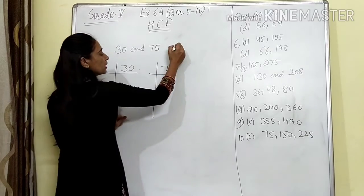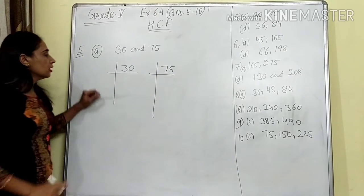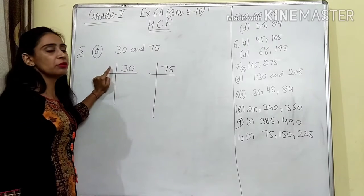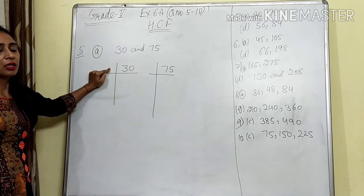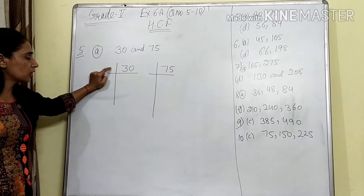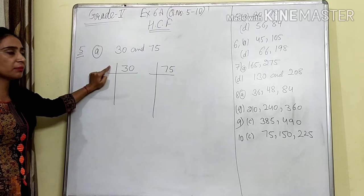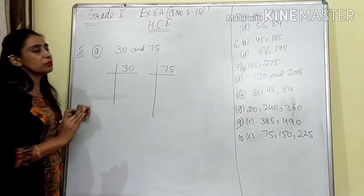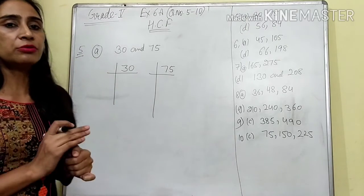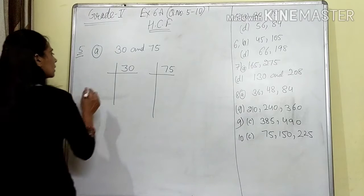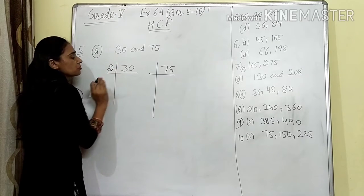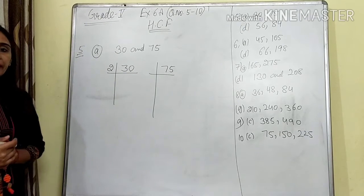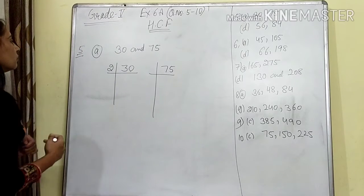Here we have to write the prime factors of these numbers. We will divide 30 by a prime number. The smallest prime number is 2. First I will check by the divisibility rule. We will check divisibility by 2 — whether this is divisible by 2. Yes, the last digit is 0, so it will be divided by 2. We will divide 30 by 2.